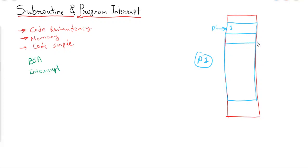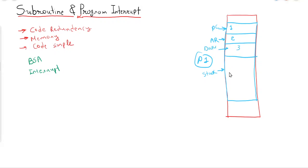All the variables used by the instructions will be stored in the second portion, and it will be pointed to by the address register. In addition to this, we will have one more portion known as the stack. Each process will have two types of stack: the first is the data stack where all data is stored, and the second is the process stack.